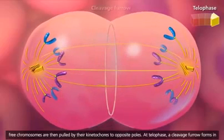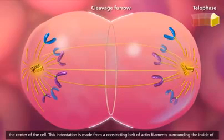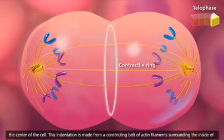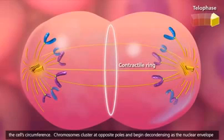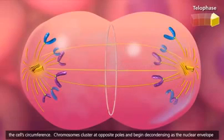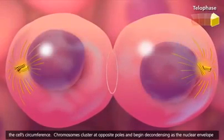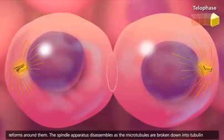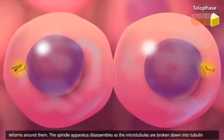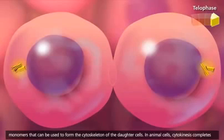At telophase, a cleavage furrow forms in the center of the cell. This indentation is made from a constricting belt of actin filaments surrounding the inside of the cell's circumference. Chromosomes cluster at opposite poles and begin decondensing as the nuclear envelope reforms around them. The spindle apparatus disassembles as the microtubules are broken down into tubulin monomers that can be used to form the cytoskeleton of the daughter cells.